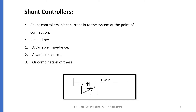Shunt Controllers are used to inject current into the system at the point of connection. The shunt controller could be a variable impedance, variable source, or a combination of these. Injection of current into the line is represented by a variable shunt impedance connected to line voltage as it causes a variable current flow. Shunt controller consumes or supplies variable reactive power when the injected current is in phase quadrature with the line voltage. Any other phase relationship will involve handling of real power as well.